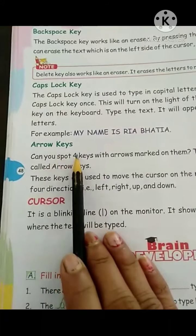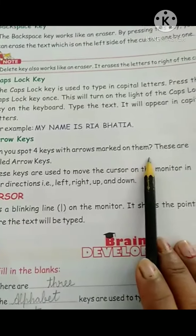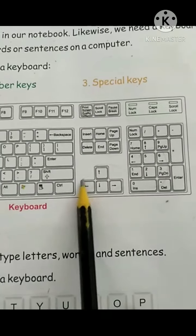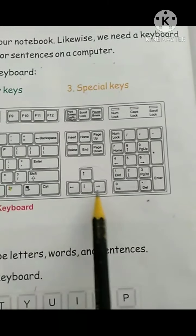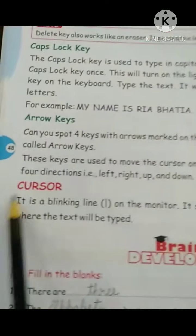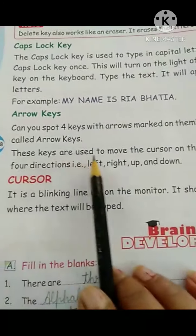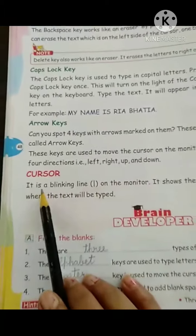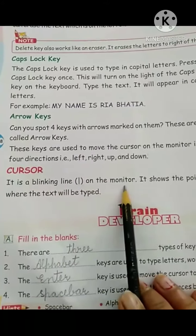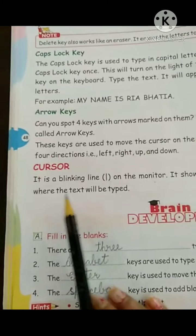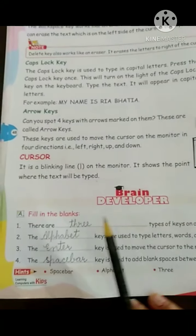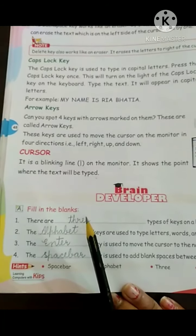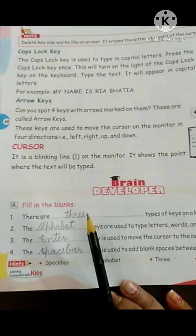The next key is arrow keys. Can you spot four keys with arrows marked on them? These are called arrow keys: left arrow, right arrow, up arrow, and down arrow. Arrow keys are used to move the cursor on the monitor in four directions — left, right, up, and down. Next is the cursor. It is a blinking line on the monitor that shows the point where the text will be typed. When you want to type any letter, you will see a cursor on the screen where the text will be started.